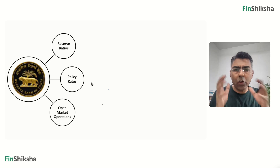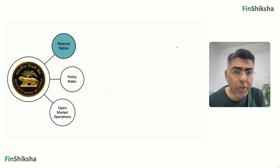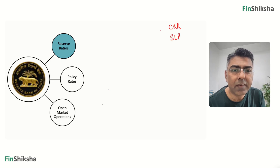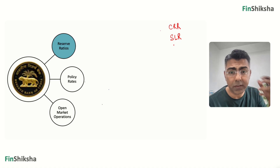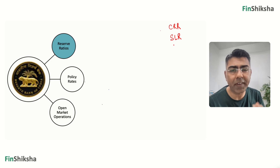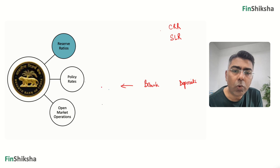Let's first understand the need for some of these. We'll start with reserve ratios. There are two types: CRR, which stands for Cash Reserve Ratio, and SLR, which stands for Statutory Liquidity Ratio. The logic is that a bank typically accepts deposits and lends out this money to borrowers, so there are loans given out on the other side.